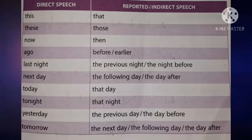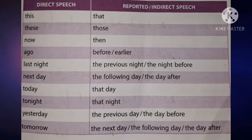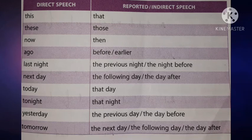Let's discuss the rest of the changes. The words in the table show time and position in direct speech and reported speech. That means while we change direct to indirect or indirect to direct, what are the changes regarding these words which denote time and position?